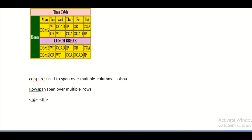The attribute syntax looks like: colspan equal to some value. The value should be a positive integer — a whole number. You provide that number to indicate how many columns or rows the cell should span.